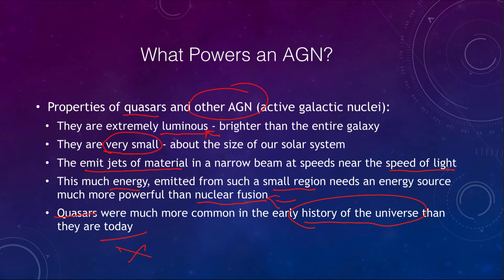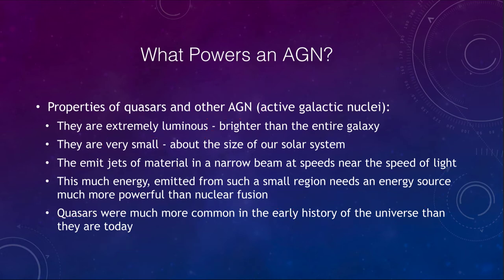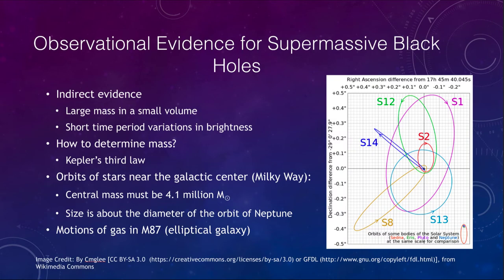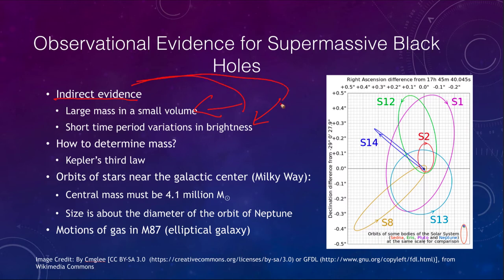Let's look for some observational evidence for these supermassive black holes. Do they really exist? Some of the indirect evidence includes a large mass in a small volume, and very short time-period variations in brightness, meaning that it has to be very small. Both of these are indirect evidence that it is a supermassive black hole.